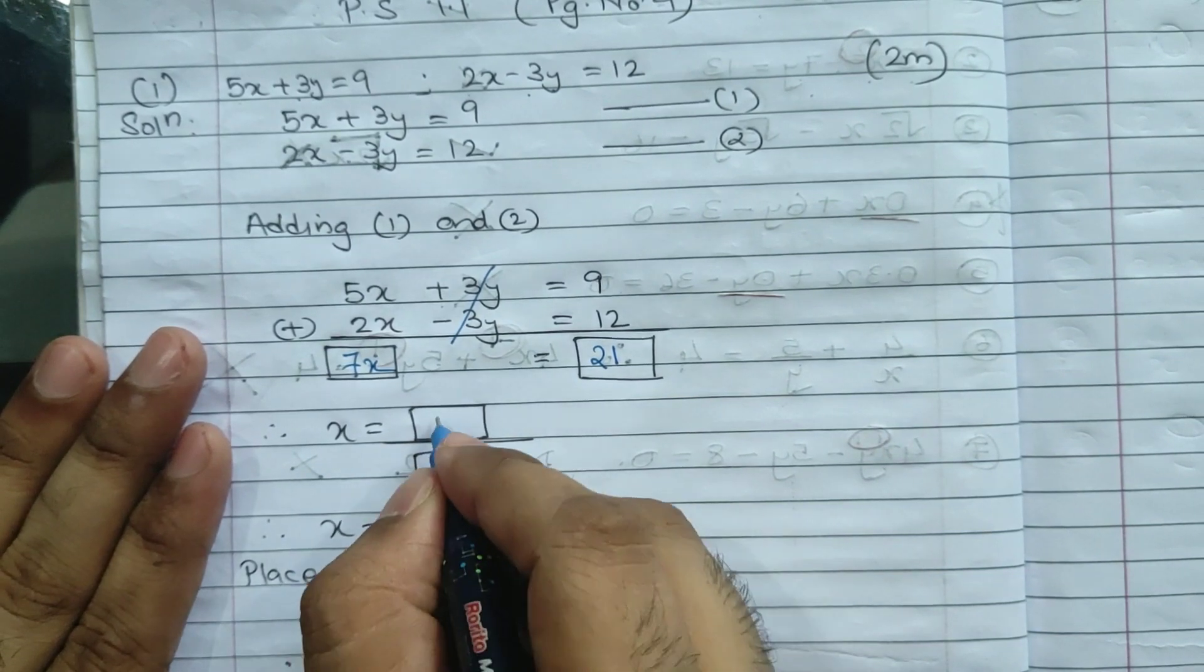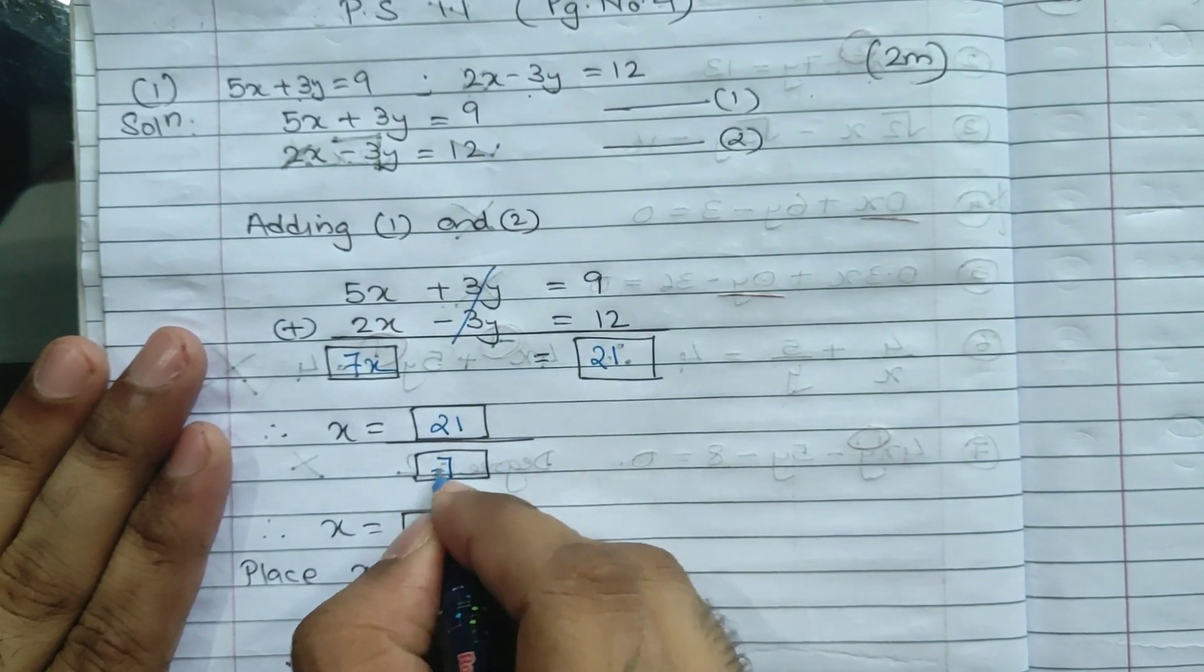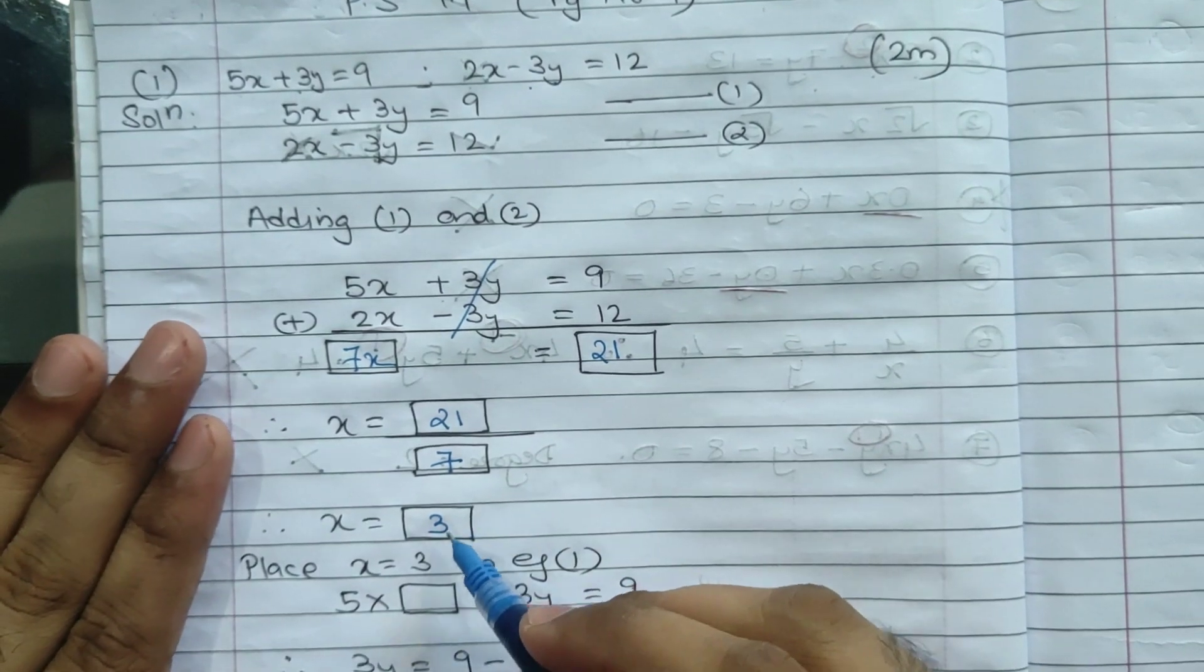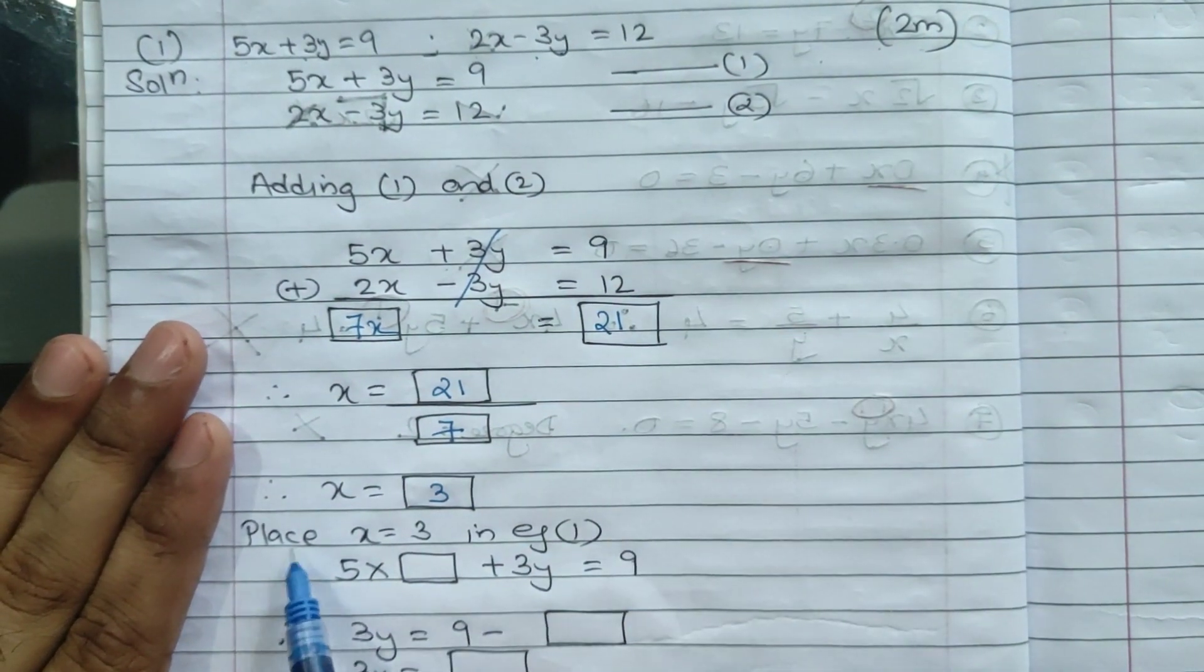So x will be equal to 21 upon 7. x will be equal to 3. Now we have to confirm that 3 is correct or not.